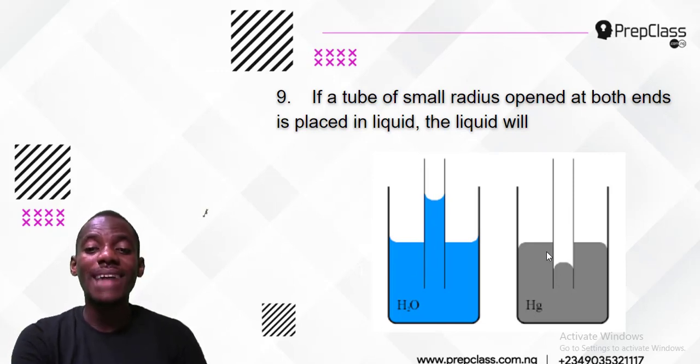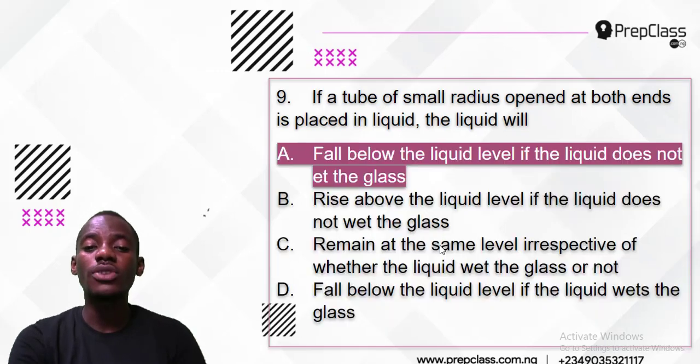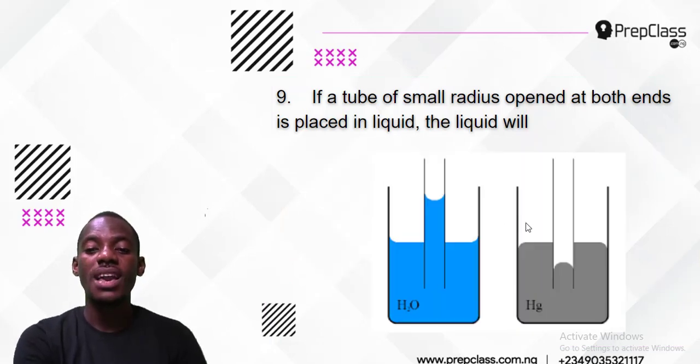If the liquid wets glass it will rise. If the liquid like mercury does not wet glass, it will not rise - it will fall. So the answer is: it is going to fall. The liquid will fall below the liquid level if the liquid does not wet glass, like mercury.